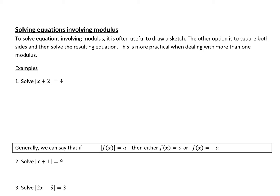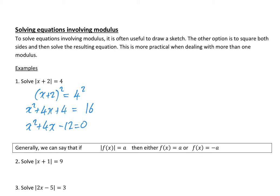Looking at this first example, we've got the modulus of x plus 2 is equal to 4. What we're going to do is square both sides, giving us x plus 2 squared equals 4 squared. Expanding the left-hand side gives x squared plus 4x plus 4, which equals 16. Bringing everything to one side: x squared plus 4x minus 12 equals 0.